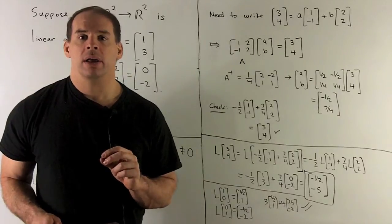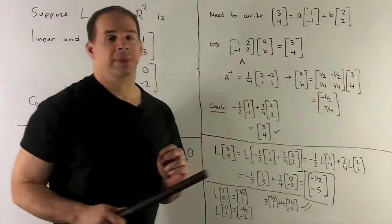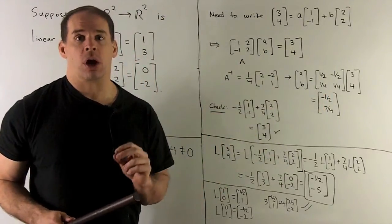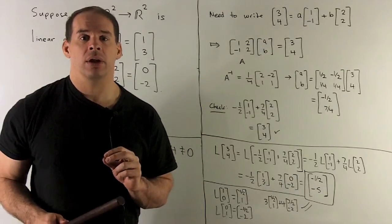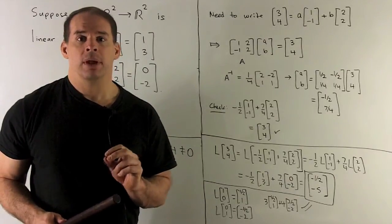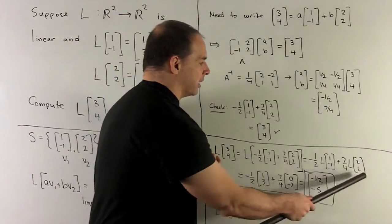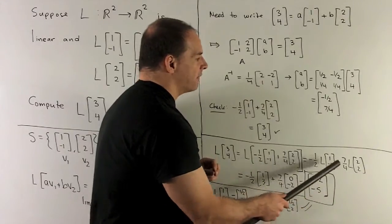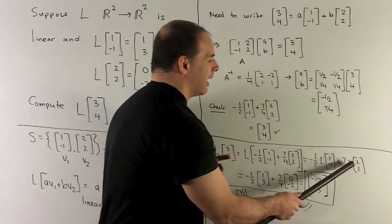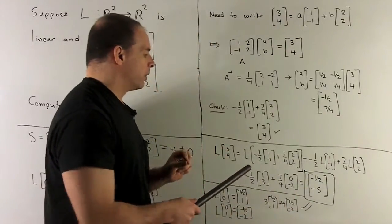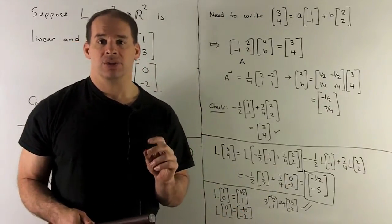We can check our work by putting those values back into the linear combination equation — that gives (3, 4), so the check works out. Now we stick things into L: L of (3, 4) is rewritten as the linear combination, then we use linearity to split it up, factor out −1/2 and 7/4. We're given L of (1, −1) and L of (2, 2), so putting those values in, we get the answer (−1/2, −5).